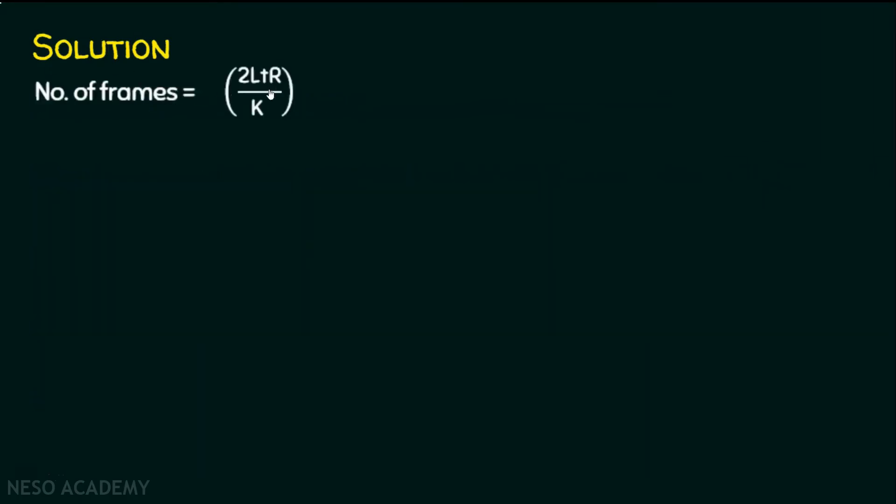The number of frames is equal to 2Ltr by k. We have already seen in the previous lecture titled Sliding Window Protocol. We know the number of frames will be in the power of two. Let the bits in the sequence number be b.